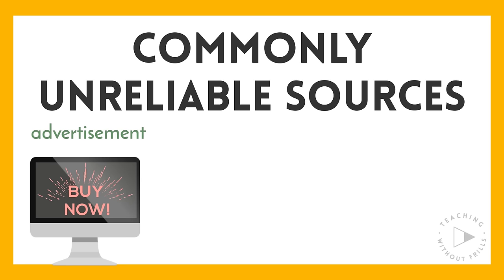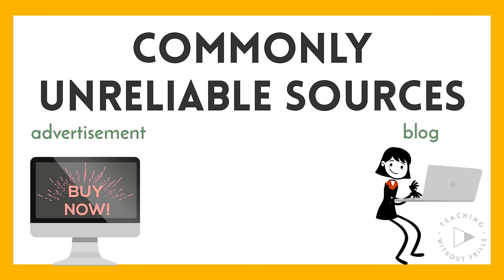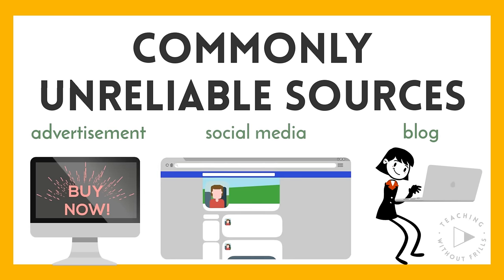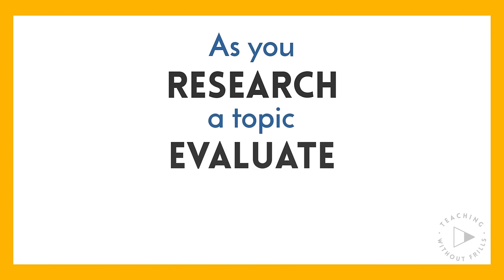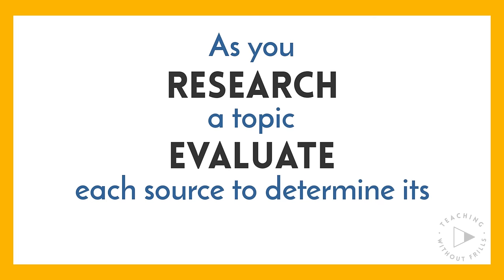There are a few types of sources that are commonly unreliable. An advertisement trying to sell a product, service, or idea probably won't provide the most objective information. A personal blog will describe the beliefs or opinions of an individual, but it may not represent the broader consensus on a topic or have supporting evidence. And social media posts often spread biased, inaccurate, or sensational information to influence users' opinions on controversial topics. So as you research a topic, evaluate each source to determine its reliability.